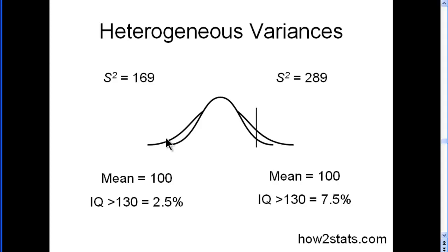And conversely, people with an IQ of less than 70 would also have greater representation in the larger variance. So in a sample with larger variances, you can expect greater numbers of people at the extremes of the distribution.